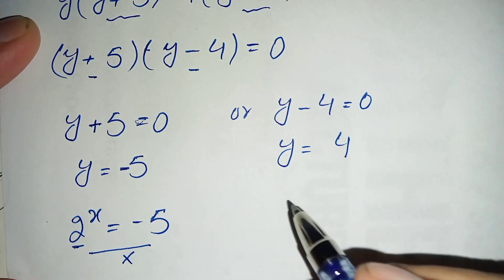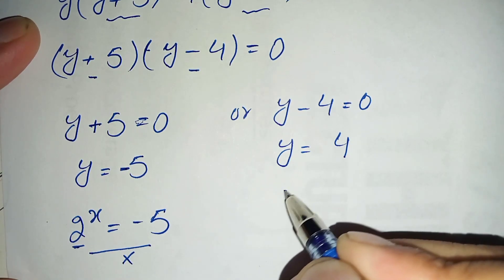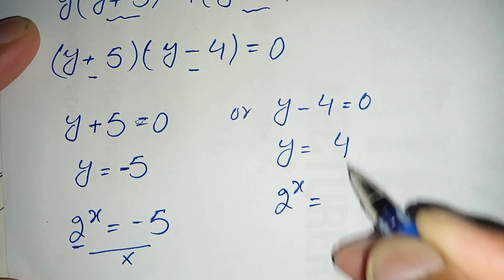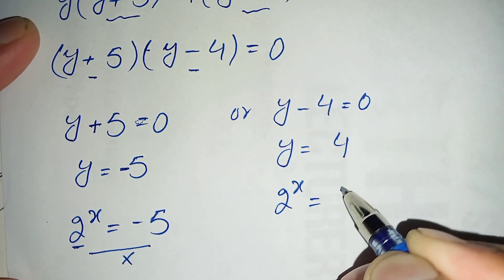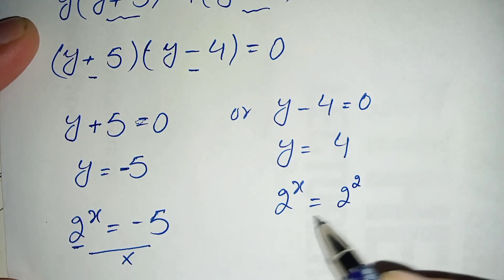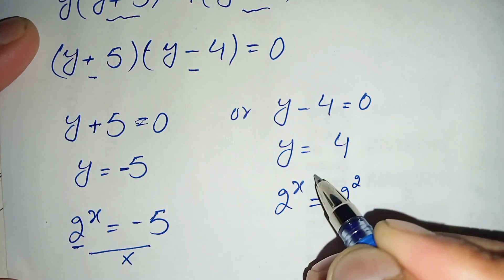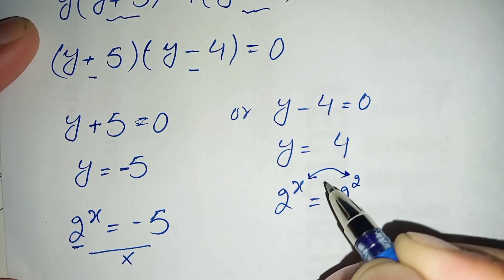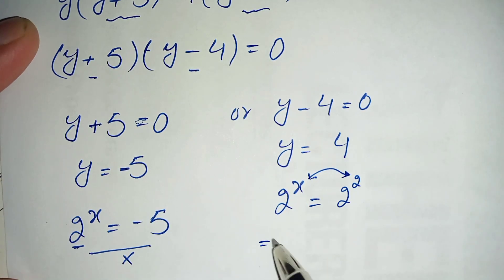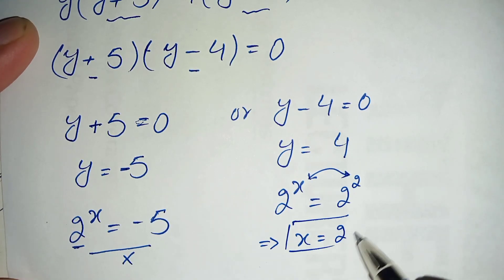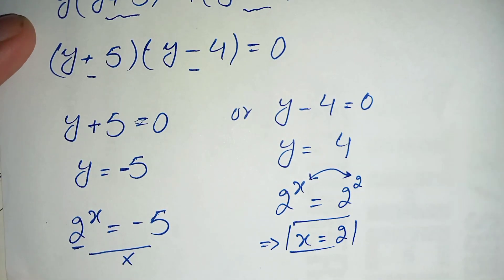Now we solve only the valid equation. We replace y with 2 raised to power x, giving 2 raised to power x equals 4. We can write 4 in exponential form as 2 raised to power 2. Now both bases are the same, so we can compare the powers. Therefore x is equal to 2, which is our only real answer.